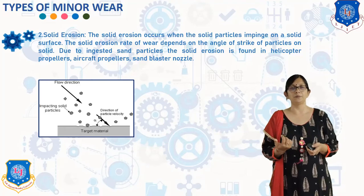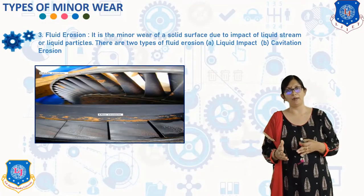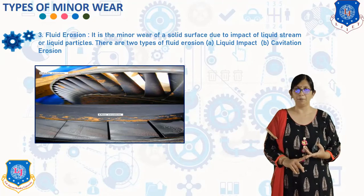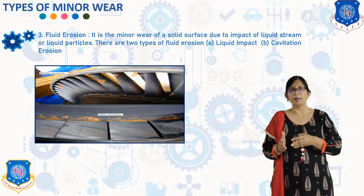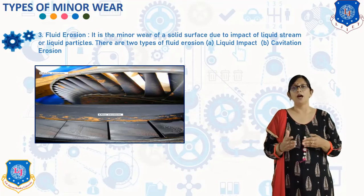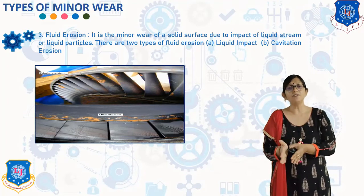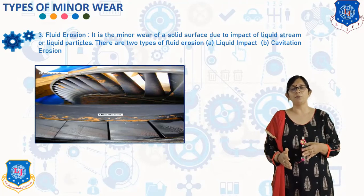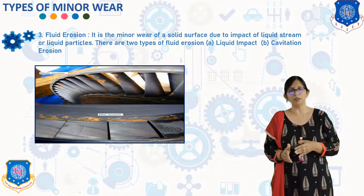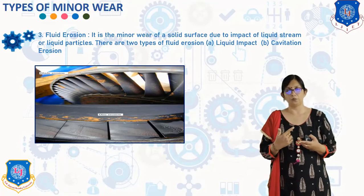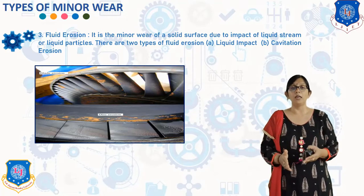The next minor wear type is fluid erosion — the wear of a solid surface due to the impact of a liquid stream or liquid particles. There are two types: liquid impact erosion and cavitation erosion. In liquid impact erosion, when small liquid particles strike a solid surface at high speed, high contact pressures are generated that exceed the yield strength of most materials, causing plastic deformation or fracture from single or repeated impacts, resulting in pitting or erosion. Examples include erosion of steam turbine blades and rain erosion of aircraft surfaces.